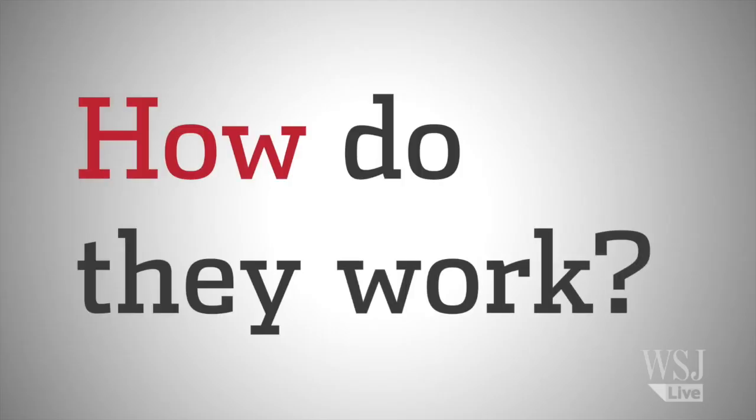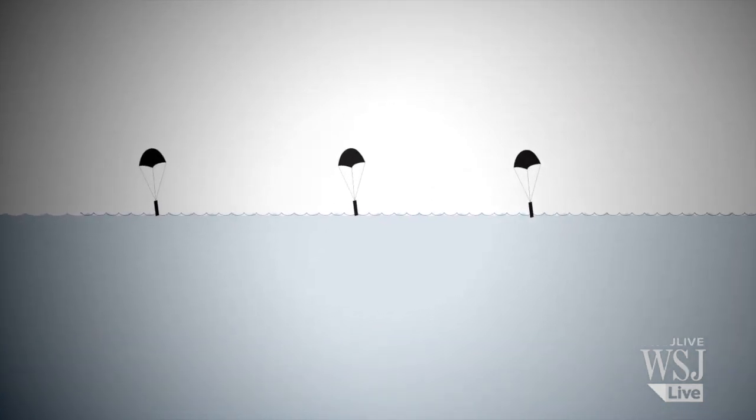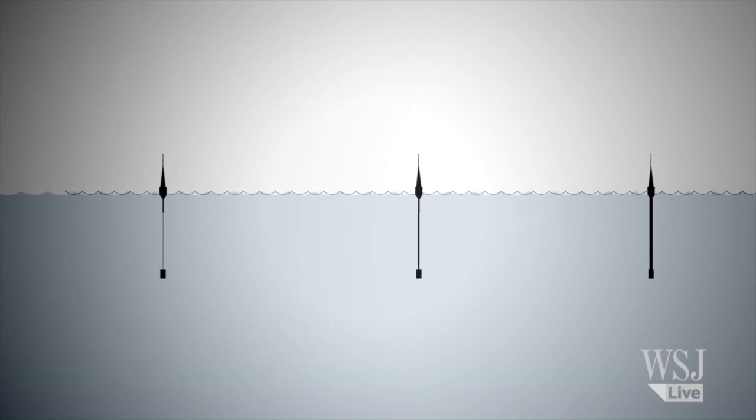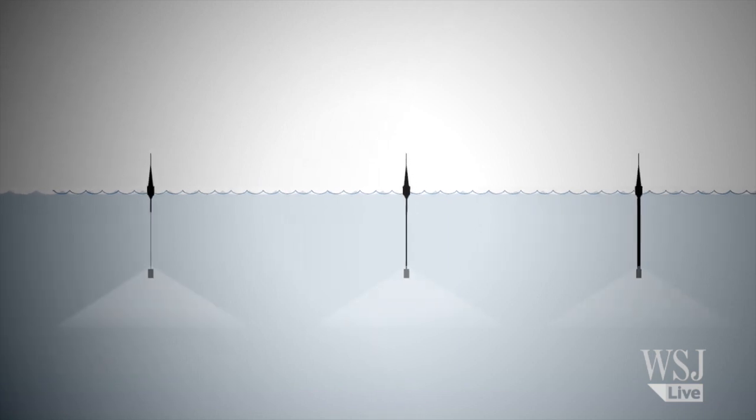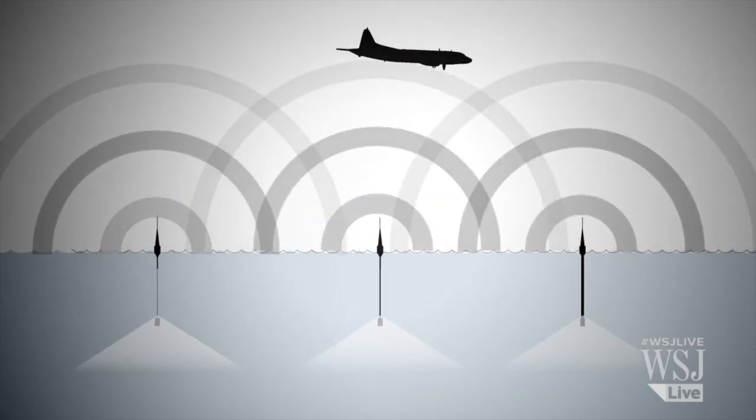How do they work? They're dropped in a pattern across the search area, spaced around 16 miles apart. The buoys unspool wire to a depth of 1,000 feet. Whatever the microphone at the end hears is relayed by radio signal to a communications plane flying above.